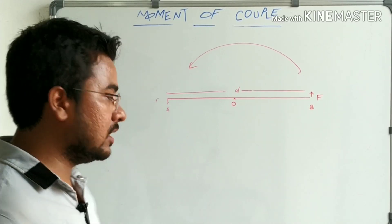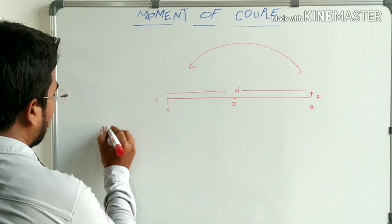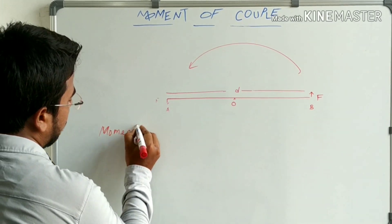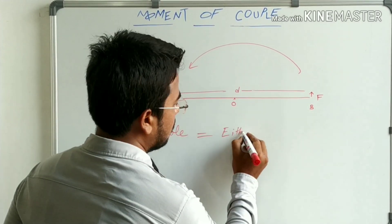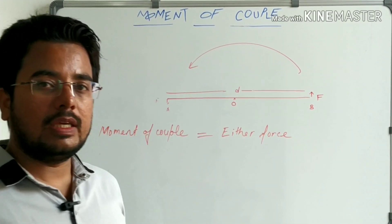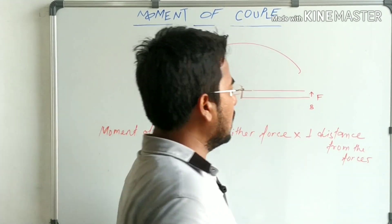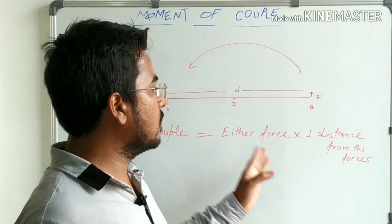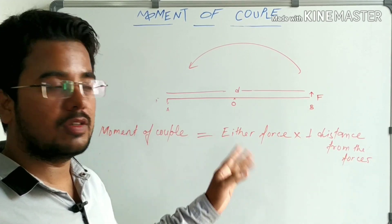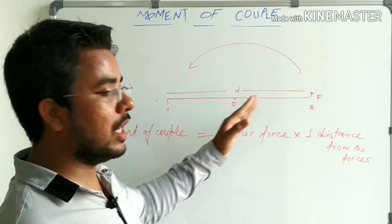Conclusion: moment of couple is equal to either force multiplied by the perpendicular distance between the forces of equal magnitude acting in opposite directions.